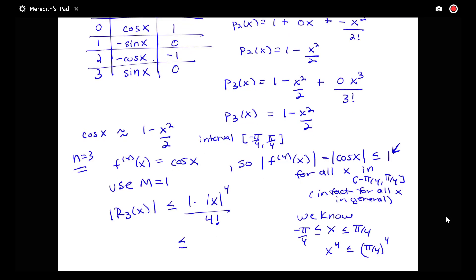So x to the fourth is going to be less than or equal to pi fourths to the fourth. That's because it's in that interval. So I can say that my error bound here of x to the fourth in absolute value over 4 factorial is less than or equal to pi fourths to the fourth all over 4 factorial.